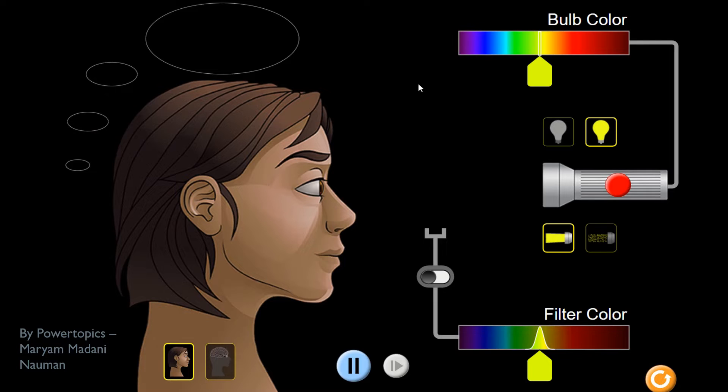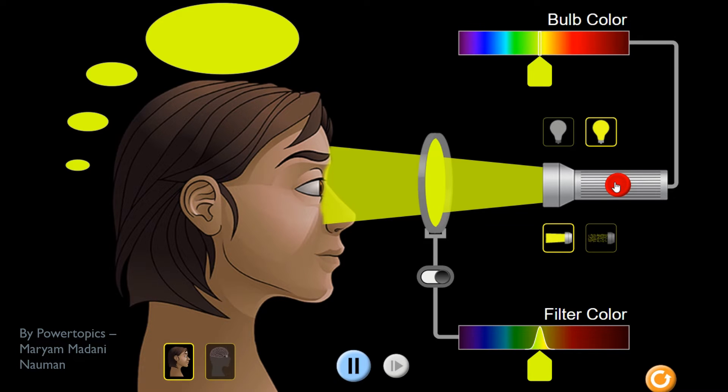You have probably used a filter in your chemistry lessons. They are used to remove something from a mixture. You can also use colored filters to remove colors from light. If a transparent piece of colored glass or plastic is placed in front of white light, then only light of that color will be transmitted. Other colors will be absorbed.